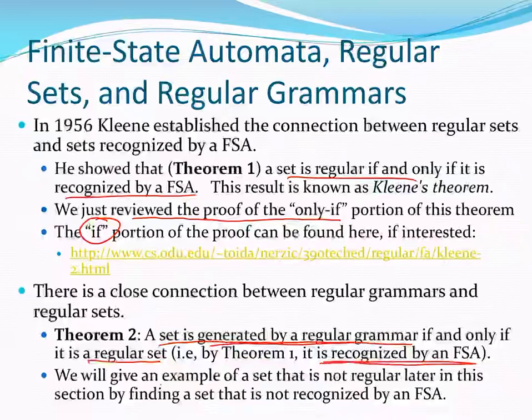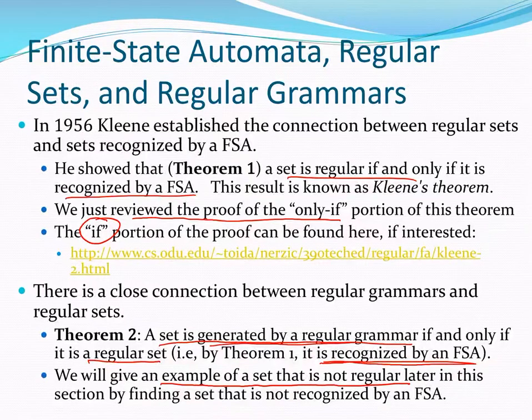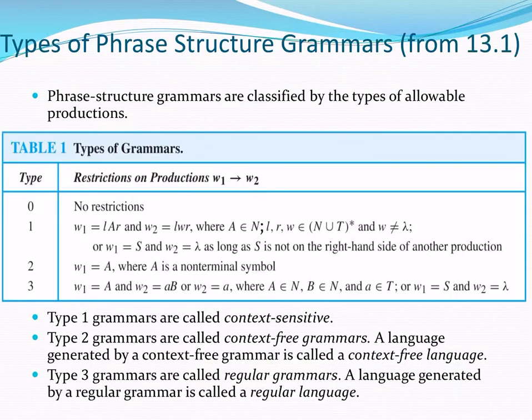Later in the chapter, you will find an example of a set that is not regular and that is not recognized by a finite state automaton. Just as a reminder, let's take a look at type three grammars or regular grammars.